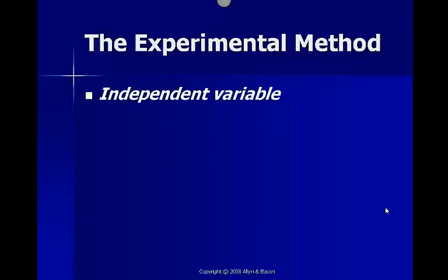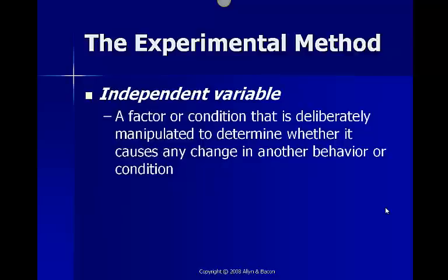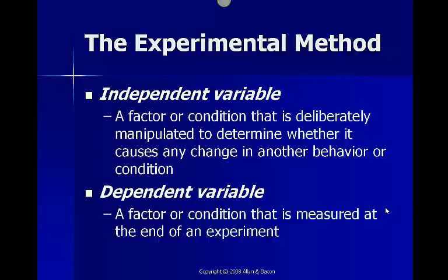In our experimental method we have two different types of variables. The first one, our independent variable, is a factor or condition that we are going to deliberately manipulate to determine whether it causes any change in another behavior or condition. Our dependent variable is a factor or condition that we are going to measure at the end of our experiment. So we will purposely do something to our independent variable to see what effect it will have on our dependent variable.